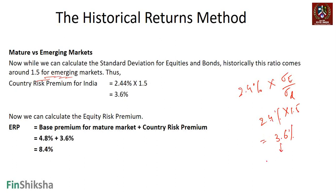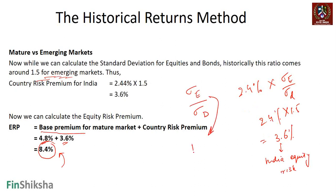That 3.6% is the India-specific excess risk on investing in Indian equities. Adding this 3.6% to the base mature market premium of 4.8% gives 8.4% as the equity risk premium for India. To get an exactly correct calculation you need the current sigma of equity markets and sigma of debt markets today. Historically this number varies between 1.2 to 2; we take an average of 1.5, which gives us the data at around 8.4%.